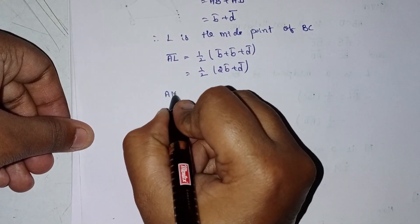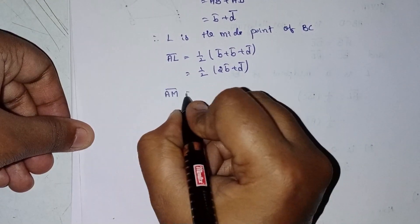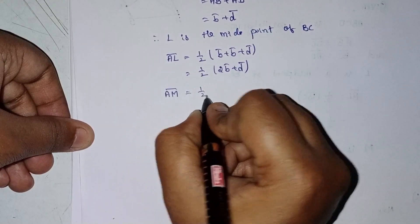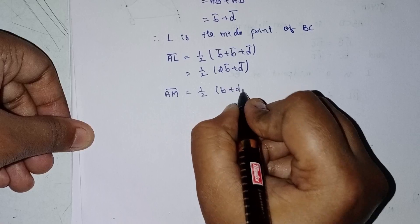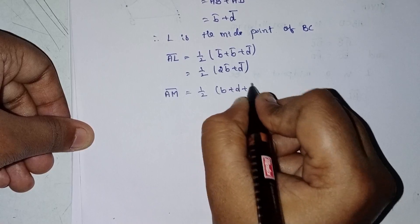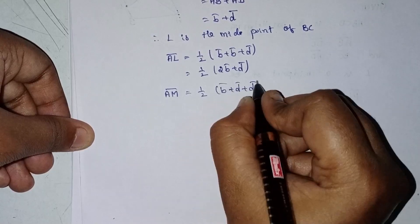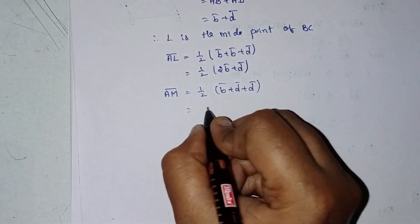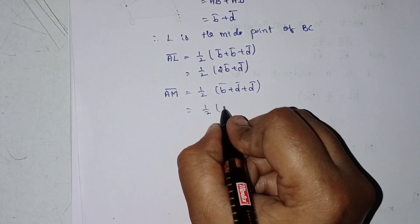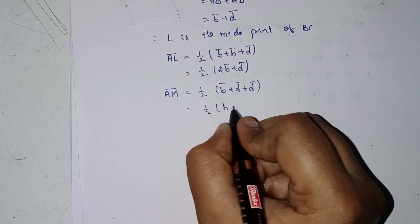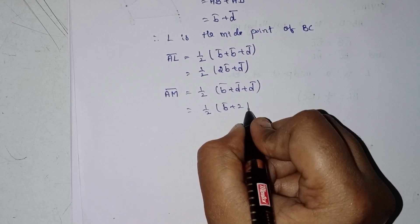AM equals half into (b + d + d), that means AM equals half into (b + 2d).